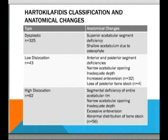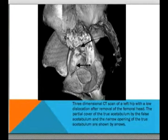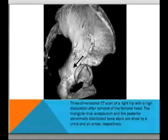This is an example of one of the 3D CT reconstructions in which the femur and femoral head have been removed. The arrows show a low dislocation; you can see the true acetabulum at the bottom continuing with the false acetabulum more superiorly. In another 3D CT reconstruction showing a high dislocation, you can see inferiorly within the circle a dysplastic triangular-shaped true acetabulum, and much more superiorly the false acetabulum where the femoral head now resides.